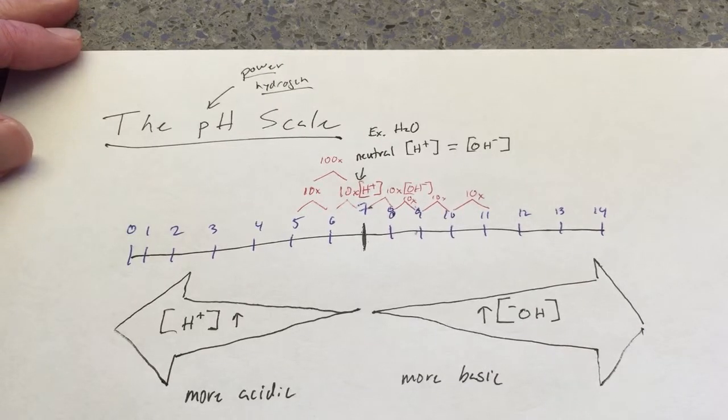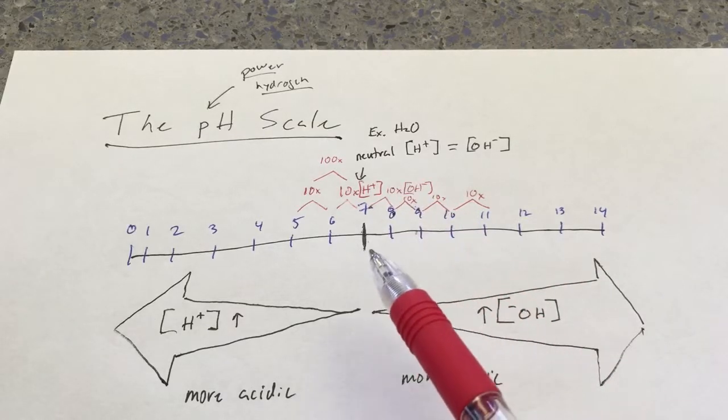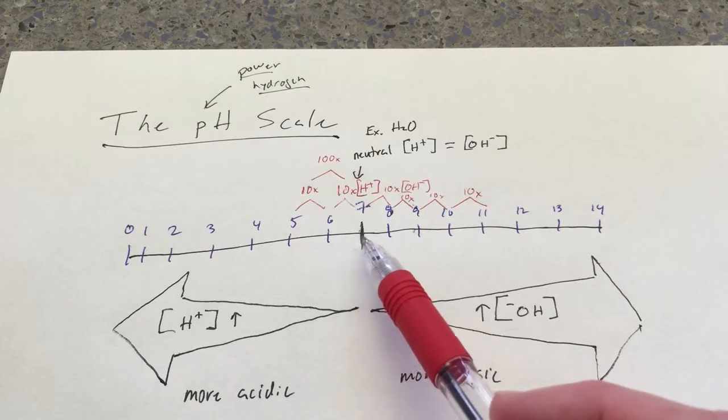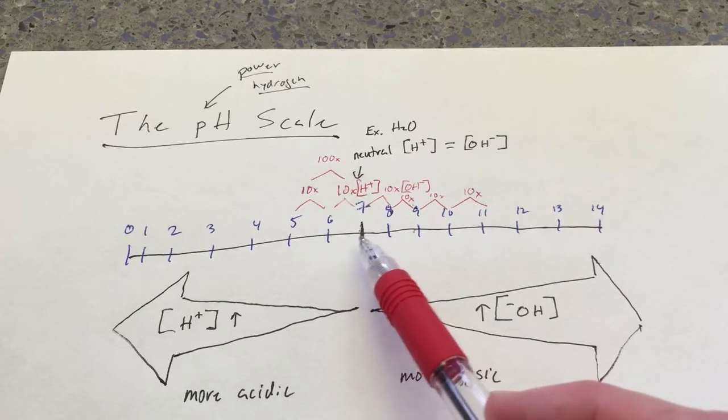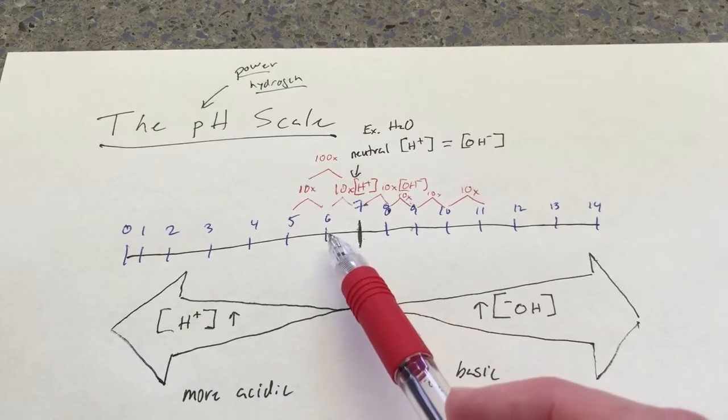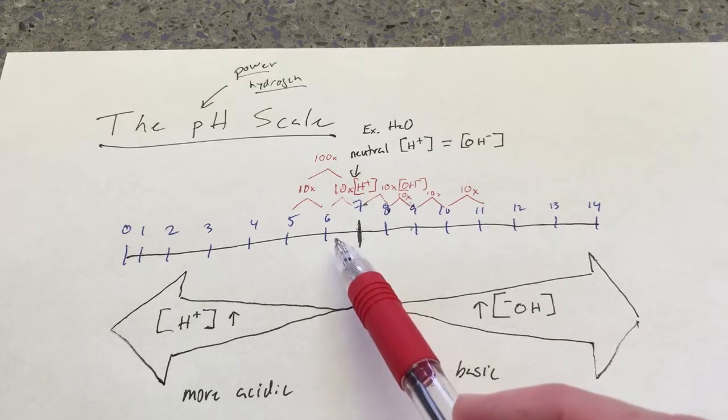So, why is this important? Well, if we consider the different biological solutions that we find in our body, say, for example, saliva or blood, those are pretty close to pH 7. Urine is a little more acidic, around pH 6-ish, between 6 and 7.